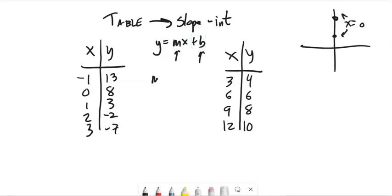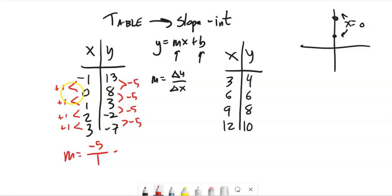So slope, as I know, is change in y over change in x. So I'm going to look at this table. So x is going plus 1 each time. And y, that looks like it's going down 5. Yeah, and it just keeps doing that. So my change in y is negative 5. My change in x is 1. So my slope must be negative 5.